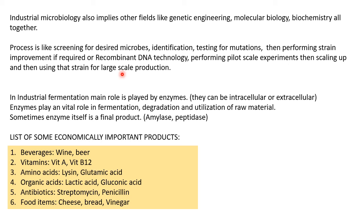In industrial fermentation, the main role is played by enzymes. Microbes are grown by adjusting parameters, and the enzyme system of a particular isolate plays the important role in fermentation. Enzymes can be intracellular or extracellular and play a vital role in fermentation, degradation, and utilization of raw materials. As enzymes utilize the media the culture grows and produces its product — and sometimes the enzyme itself is the final product, for example amylase or peptidases.